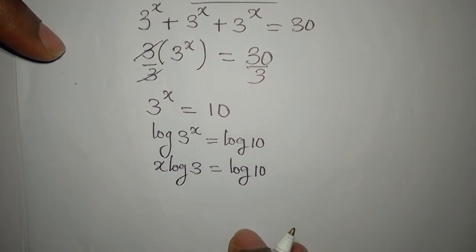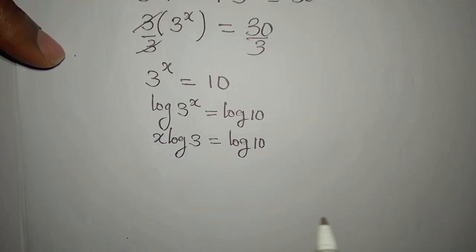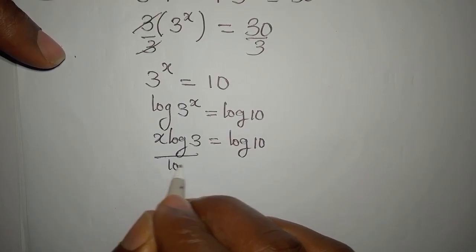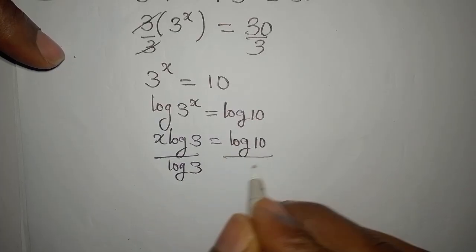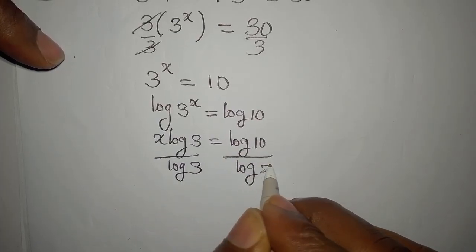And then what do we do? We're going to divide both sides by log 3 so that x will be free.